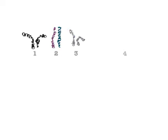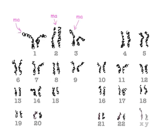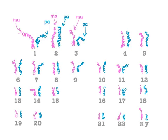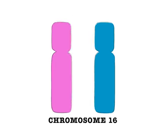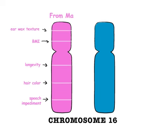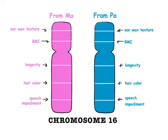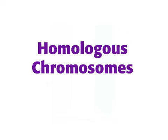You have two sets of 23 chromosomes, one set from each parent. For almost every chromosome you inherit from your mother, you also inherit one from your father that has his versions of the same genes. Together they form a pair of homologous chromosomes.